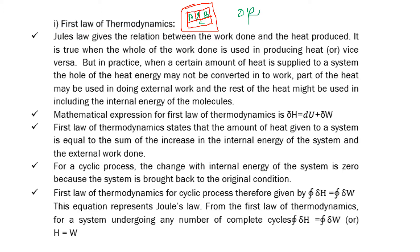Now, in thermodynamics we have different types of systems. The first is an open system, the second is a closed system, and the third is an isolated system. An open system exchanges both matter and energy with the surroundings — for example, an air compressor. A closed system exchanges energy only, not matter — for example, gas in a cylinder. An isolated system has no exchange of matter or energy; it uses an insulating container.